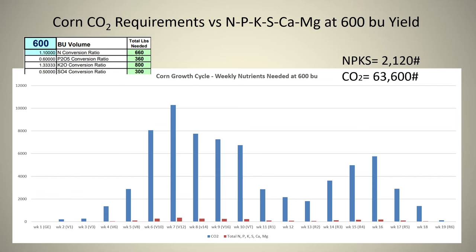Carbon and oxygen to make CO2 cannot be purchased from a co-op. It comes from microorganisms — the biology: the bacteria, the fungi, the protozoa, the nematode, down in the soil, in the root system, producing CO2. They're aerobic microorganisms. They breathe in oxygen. They kick out CO2.